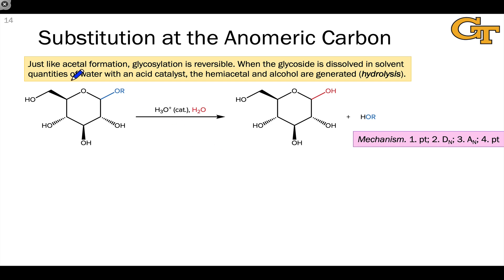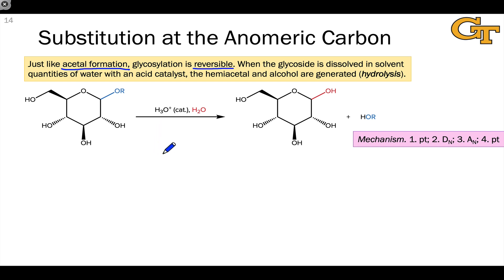One of the nice things about acetal formation is that this reaction is reversible — we can get back the OH-containing hemiacetal, or all the way back to the carbonyl compound, just by treating with excess water and acid. The mechanism here is identical to glycoside formation: it's a nucleophilic substitution at the anomeric carbon, just with the roles of nucleophile and leaving group switched — now the alcohol acts as the leaving group and water acts as the nucleophile.